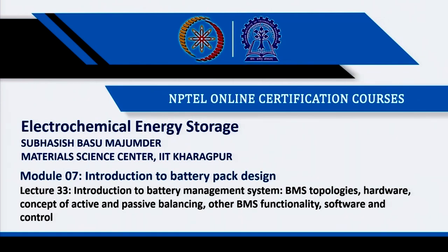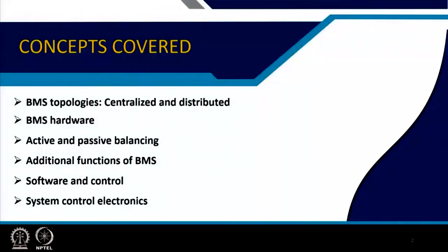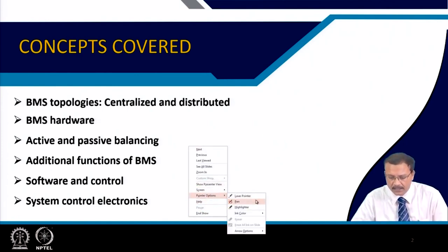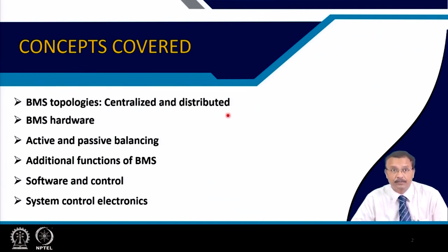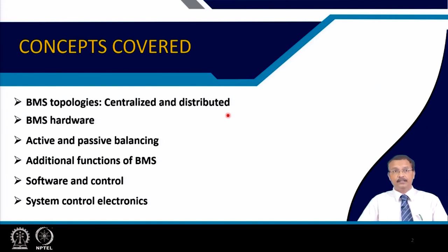I will cover the hardware concept, mainly the hardware, and then the concept of active and passive balancing, what are the other functionalities of BMS, software and control which is a pertinent part of the BMS itself, and system control electronics — what hardware is used. First I will talk about the centralized and distributed parts of BMS topologies, then the hardware itself.